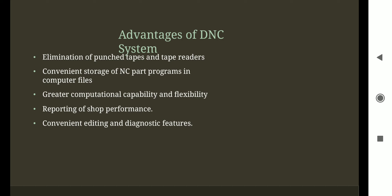Fifth advantage is convenient editing and diagnostic features. We can use a feedback system with a DNC system and diagnose errors. There are a number of features in an advanced DNC system. We can edit any program through a single computer, a satellite computer, or a mini computer installed on a machine itself to reduce the load of the central computer. It is very convenient to edit a program in a DNC system.